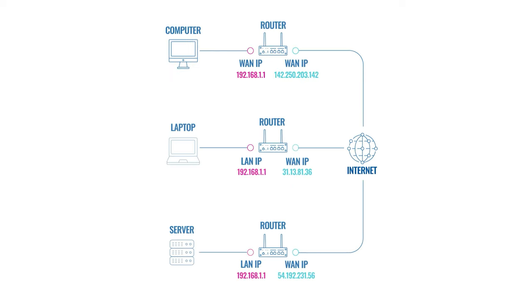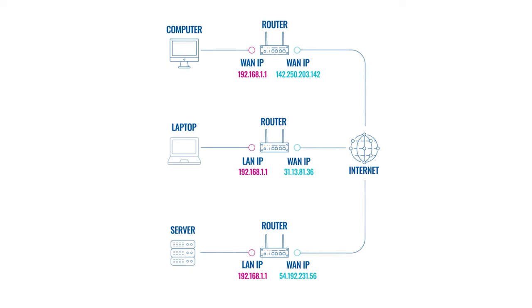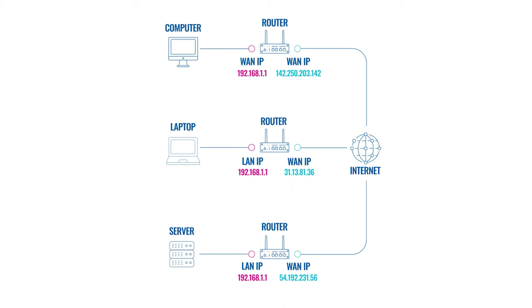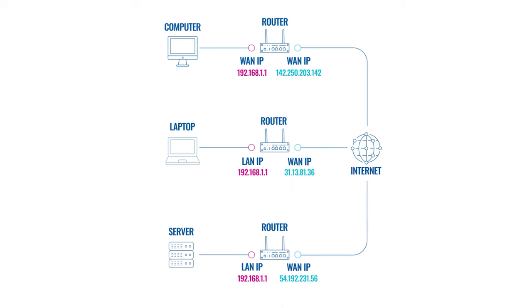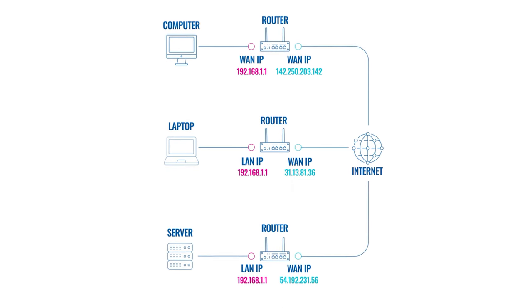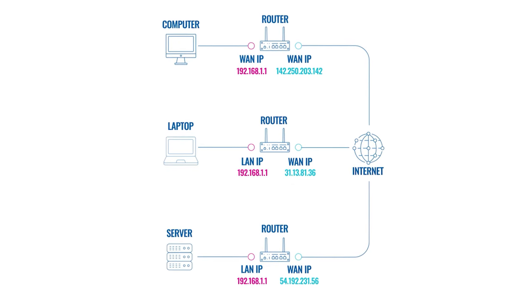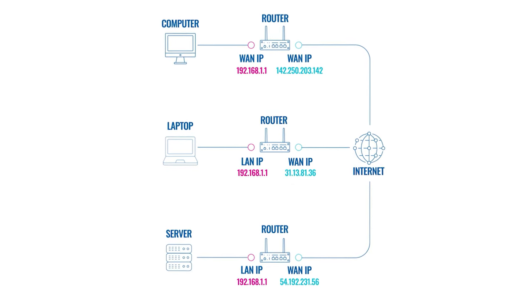WAN is a larger scale network that groups together several LANs. Often referred to as the internet, WAN is a network that not always, but most commonly, requires public IP addresses — to allow communication between devices that belong to different LAN networks.